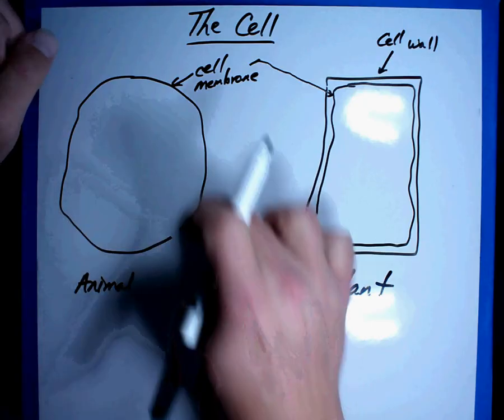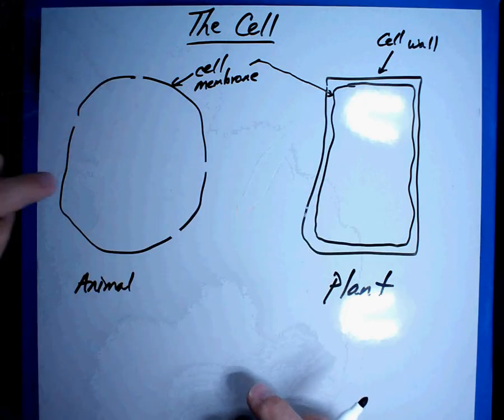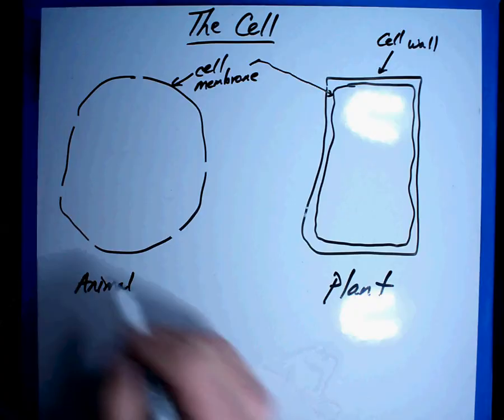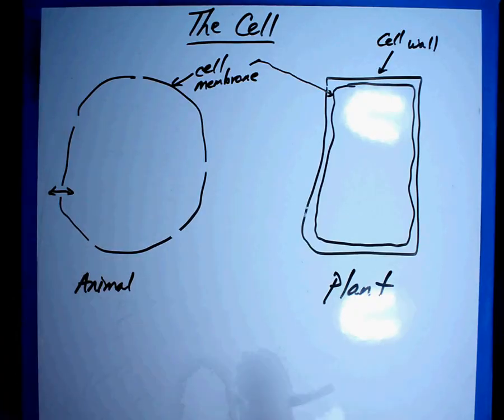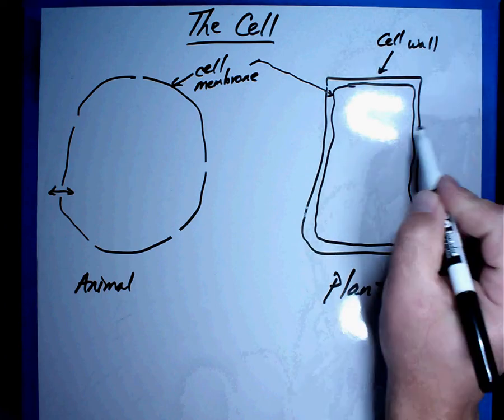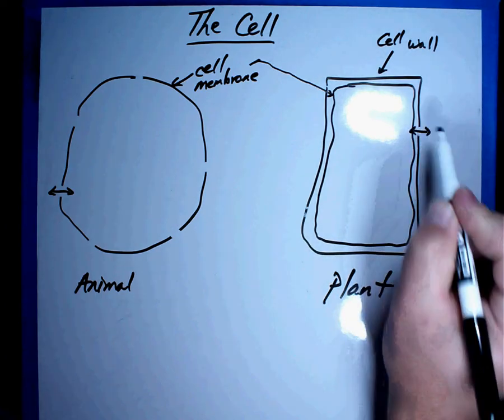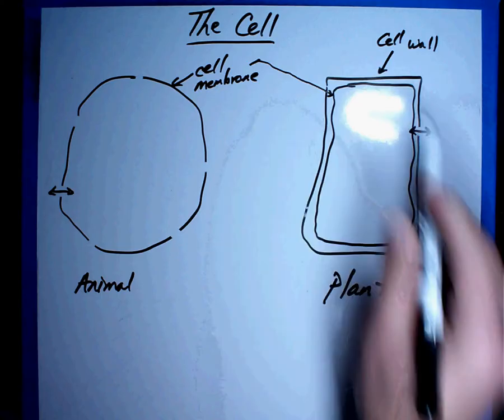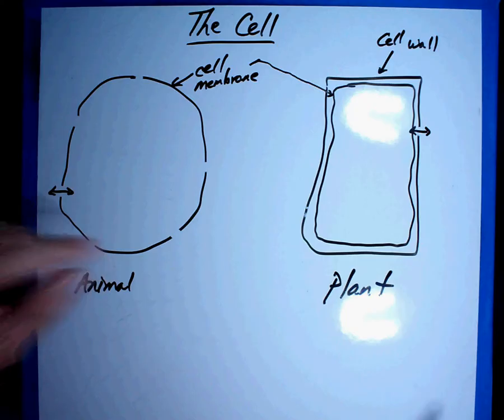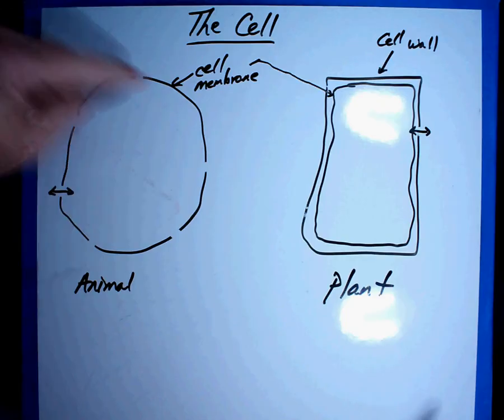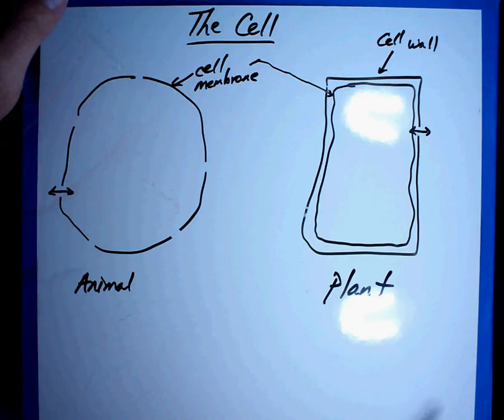Borders also have openings. So what I'm going to do is I'm going to make a couple of openings in here. And we can let things in and out very easily. The same thing is also true for plant cells. They can let things in and out and those openings would be anywhere around the outside. I just put in one for now. But just like a country, you can let things in and out but you can also close them off. And plant and animal cells can do that as well.